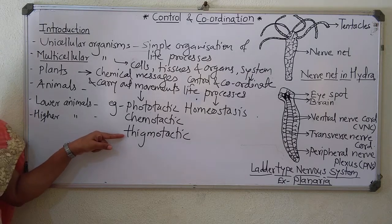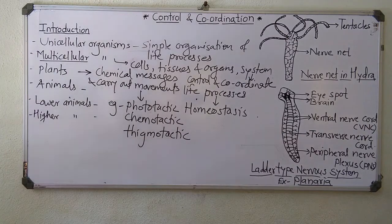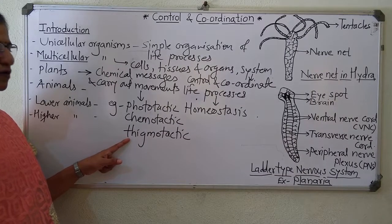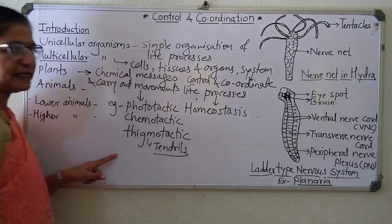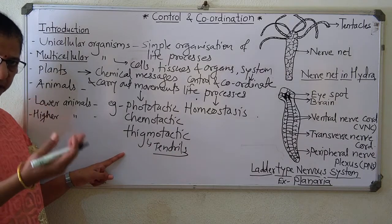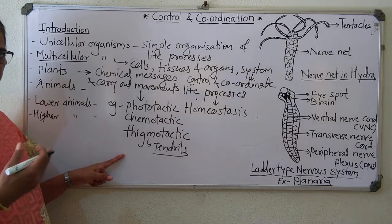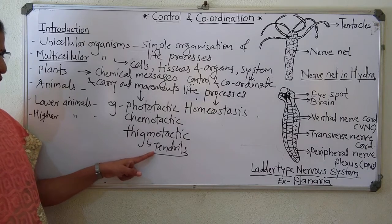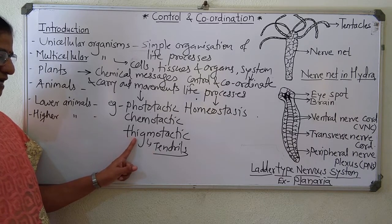Thigmotactic means the growth of a plant in response to mechanical support. For example, the tendrils of plants take mechanical support of another tree, stem of a tree, or a building. So they take mechanical support and start growing up. Such kind of tendrils giving response to mechanical support is known as thigmotactic movement.